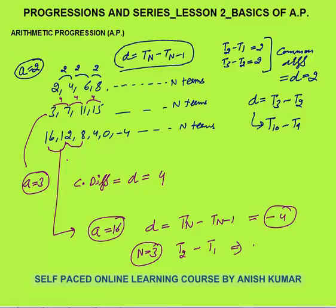Arithmetic progression is a progression in which the difference between any two consecutive terms is the same. The difference is called common difference, represented by small d. Small d is Tn minus T(n-1), meaning nth term minus the (n-1)th term.